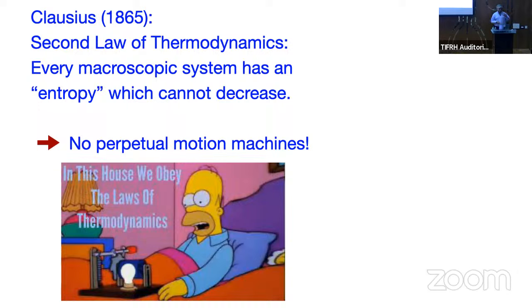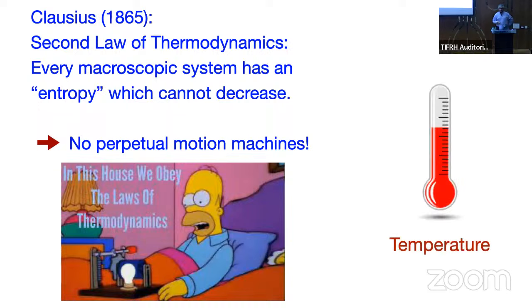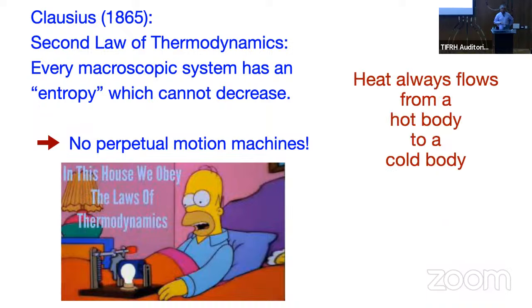That was just an illustrative statement of the fact that you can't make perpetual motion machines. There was also the concept of temperature, something you measure with a thermometer. In terms of temperature, the second law of thermodynamics tells you that heat always flows from a hot body to a cold body, and not in the other direction.